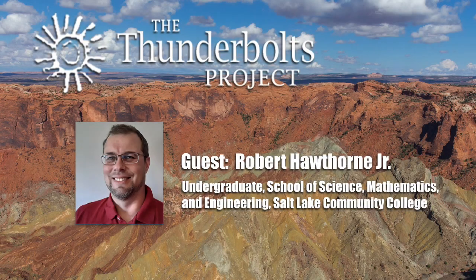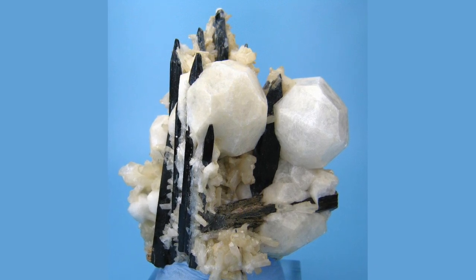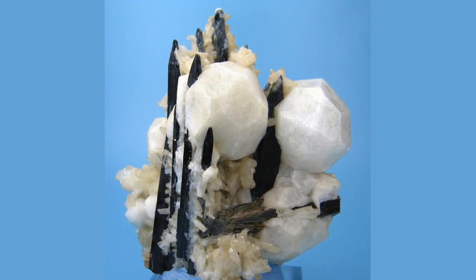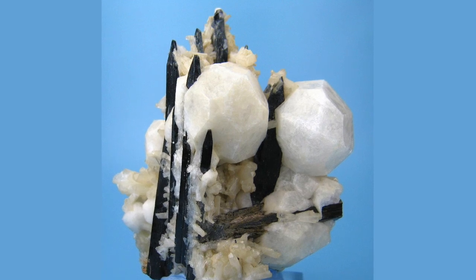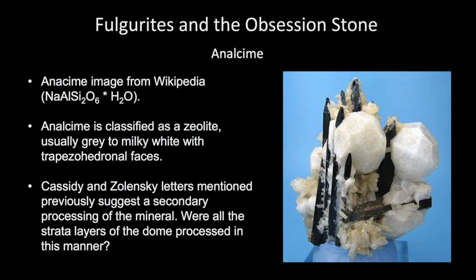I would like to talk about analcime now. This is a picture of analcime from Wikipedia, and you can see that it kind of resembles a golf ball shaped, milky white kind of spheres with trapezo-hedronal faces on them, according to their crystal structure. However, when I show you the picture of the Obsession Stone, you'll see that it's quite different. Analcime is classified as a zeolite — 'zeo' meaning to boil and 'lite' meaning rock. The Cassidy and Zielinski letters mentioned previously suggest a secondary processing of the mineral.